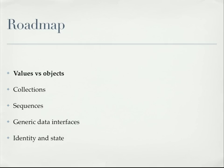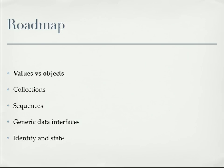The five areas I want to talk about today: the difference between values and objects, and then in terms of Clojure I'm going to talk about collections, sequences, generic data interfaces, and identity and state. There are another five to ten major areas I'm not going to cover, but these are the areas that have really made a difference to me and will help you get a feel for why Clojure is a really great language.